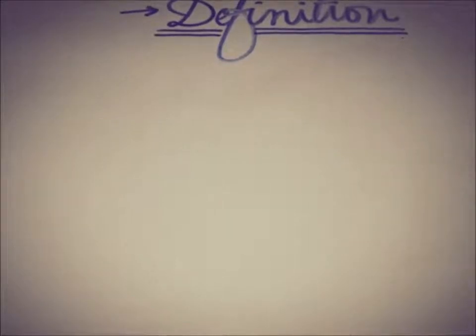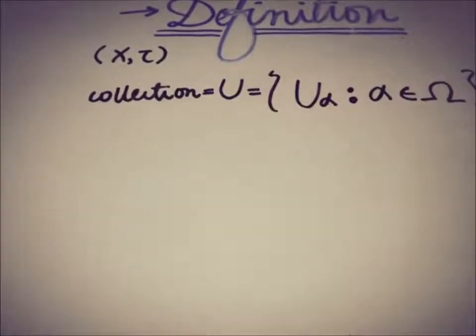So defining the finite intersection property for a topological space, of course we need a topological space x and tau and a collection u that contains the subset of x.